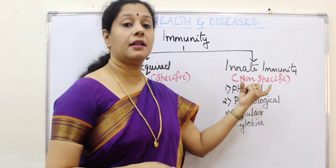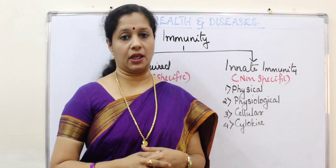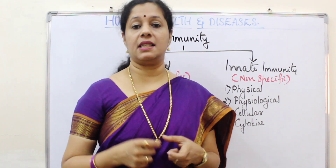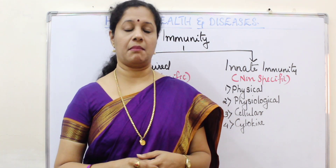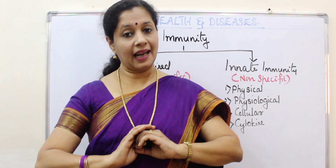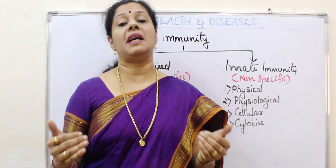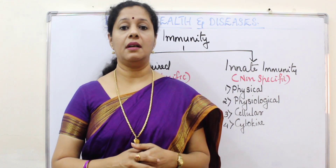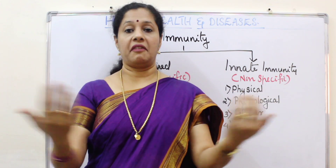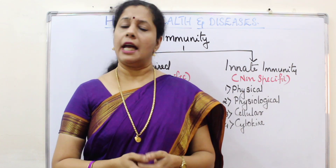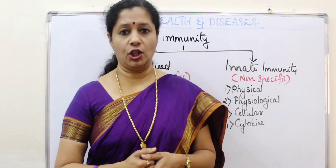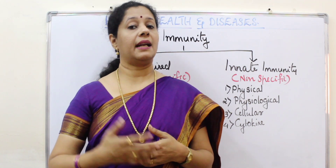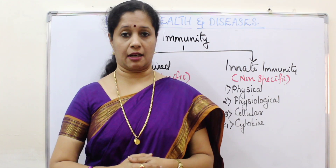Innate immunity is a non-specific type of immunity. It is not very specific to a particular bacteria or virus or any disease-causing microbe. Rather, it is preventing every organism from entering the body by creating a barrier. For example, if you have a house and there is no fencing or wall outside, anybody can come inside — a dog, a cat — there is no specificity there.